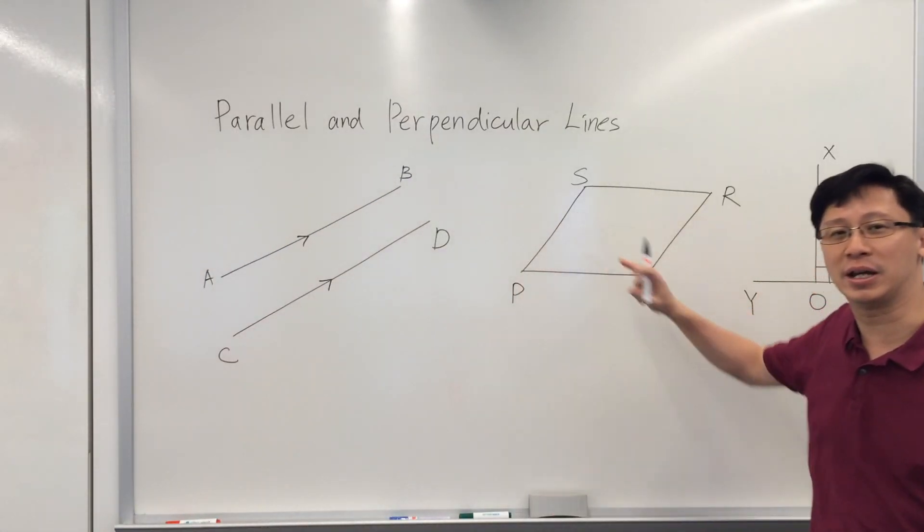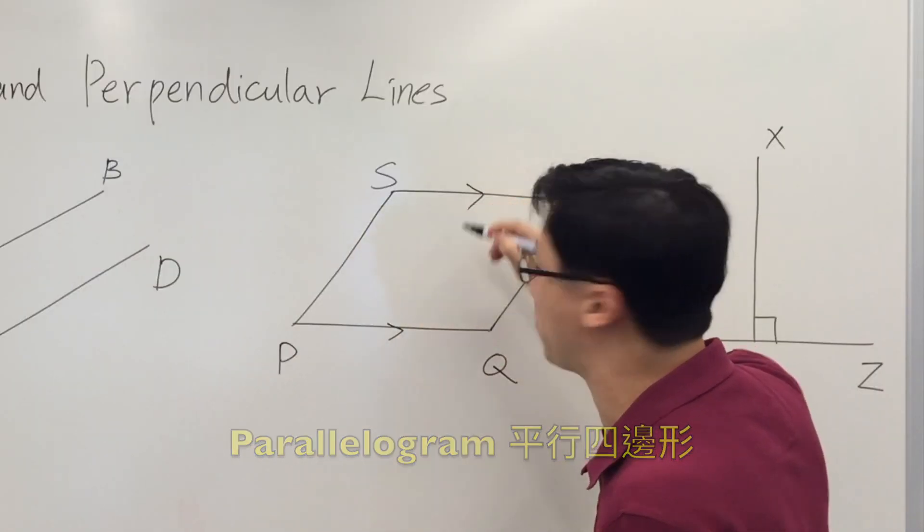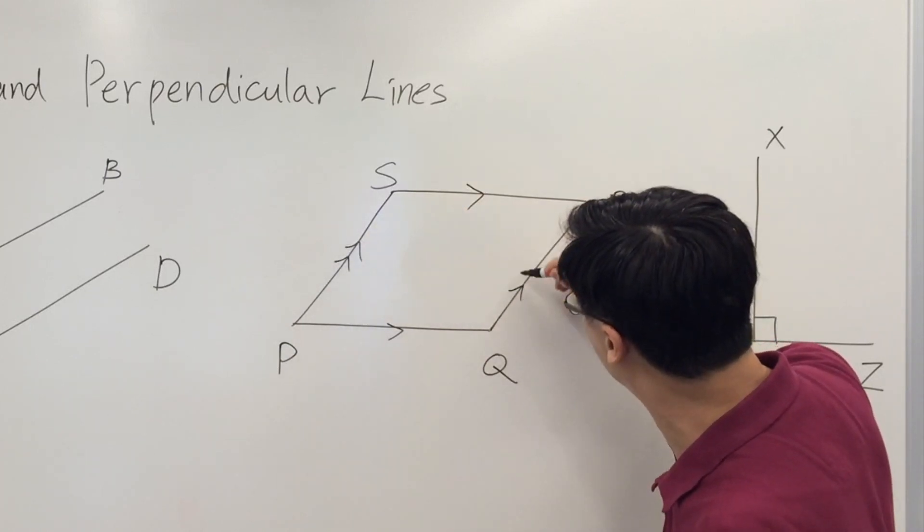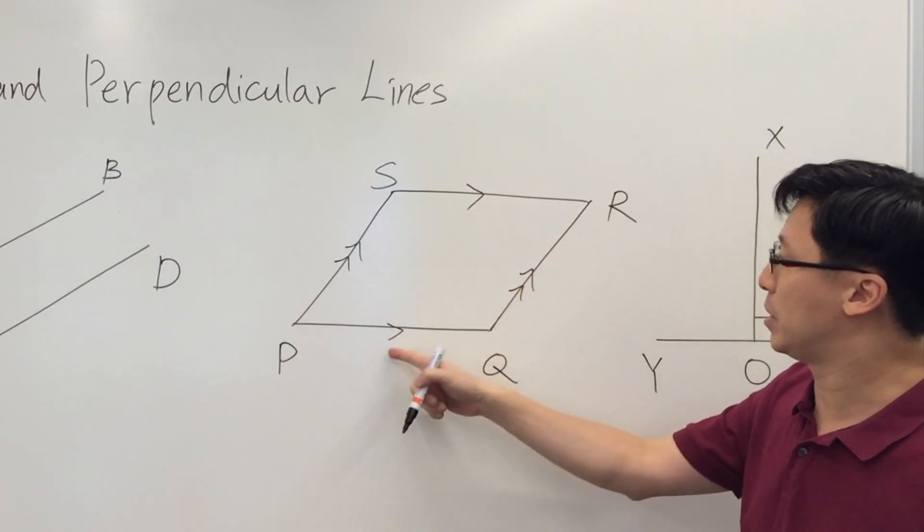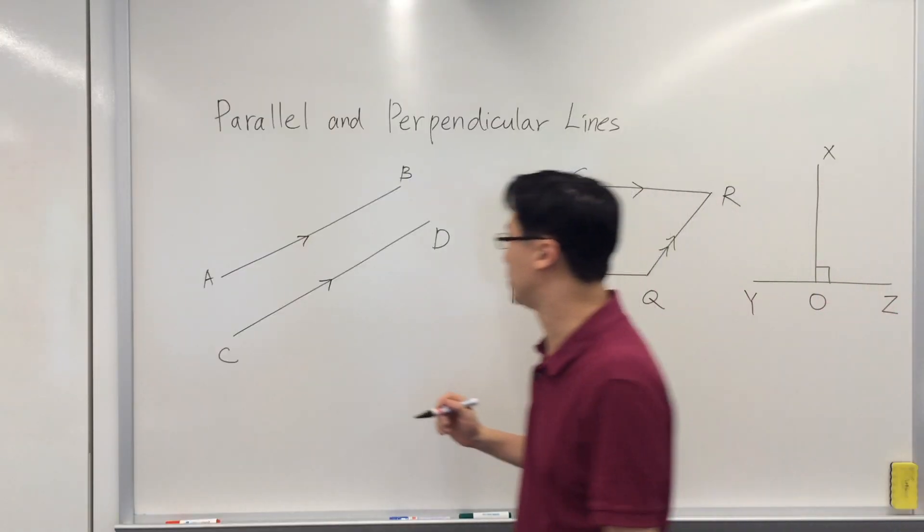This figure we call a parallelogram. If we have two sets of parallel lines, that means we can use two different sets of arrowheads. This is PQ parallel to SR and PS parallel to QR.